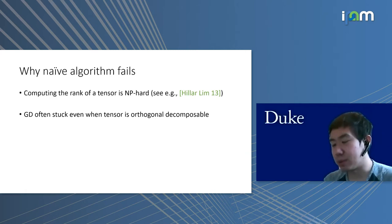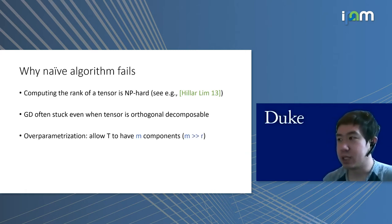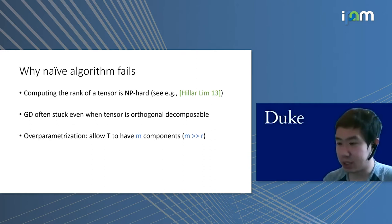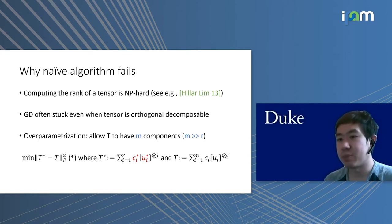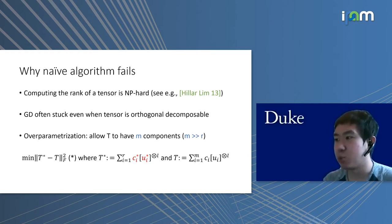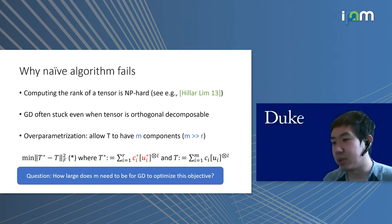To get around these problems, we consider a technique called overparameterization. We allow the tensor T to have M different components, where M is potentially much larger than R. The overparameterized tensor decomposition problem is to minimize this objective, where T-star is a rank-R tensor but T is parameterized with M components, where M is larger than R. The question is: how large does M need to be for gradient descent to optimize this objective?